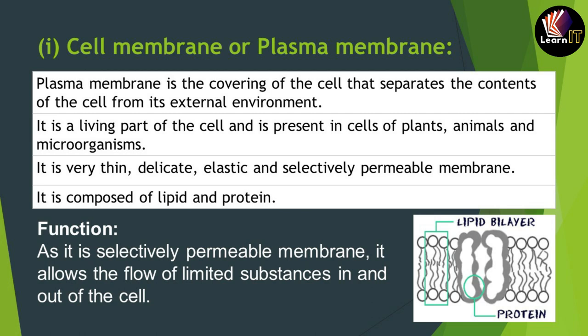The basic function of the cell membrane is similar to what a door does in our house. It allows the cell to control what passes inside or outside. It is called selectively permeable because it allows only a limited number of substances in and out. For example, in a house, the door only allows known persons to enter — similarly, only certain substances get entry and exit through the cell membrane.